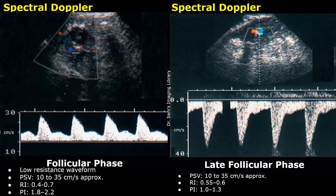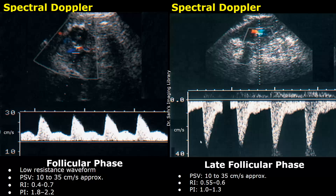Towards the end of the follicular phase, that is the late follicular phase, the PSV may sometimes go over 35 centimeters per second, but that is normal. The resistive index can be between 0.55 to 0.6, and the pulsatility index can be between 1.0 and 1.3.